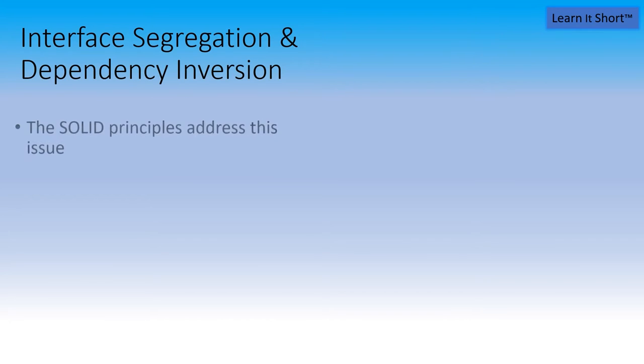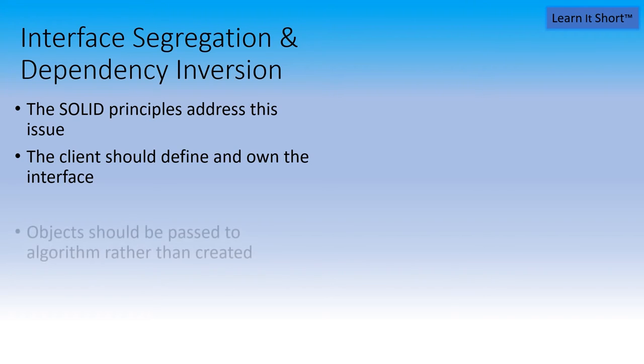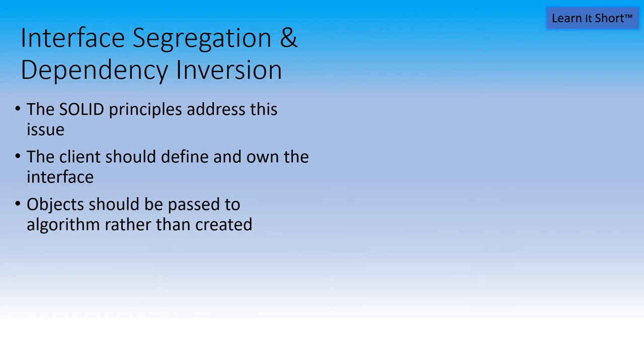The solid design principles, and we've got a video series on that as well. So take a look at the card above. The I in solid interface segregation and the D dependency inversion tells us that the client here should be defining and owning the interface. The interface is defined by the caller, not the callee. So before circle defined the interface, we need to have the code we just looked at, the client code, the caller determine the interface. And we're going to get rid of the new inside this code and have the objects passed in to the algorithm rather than being created by the algorithm.